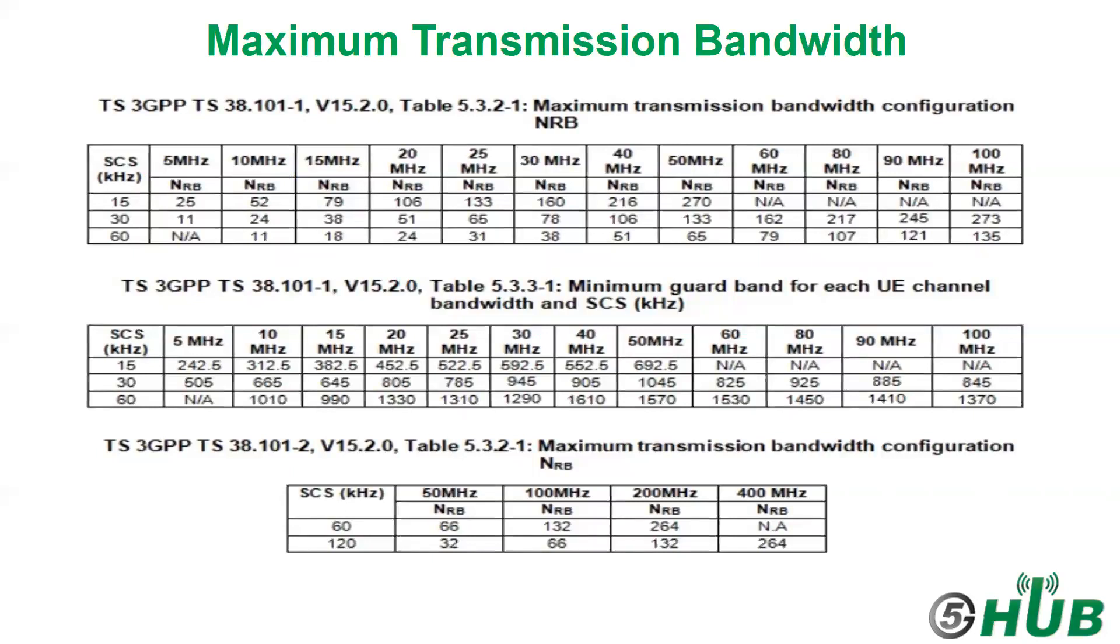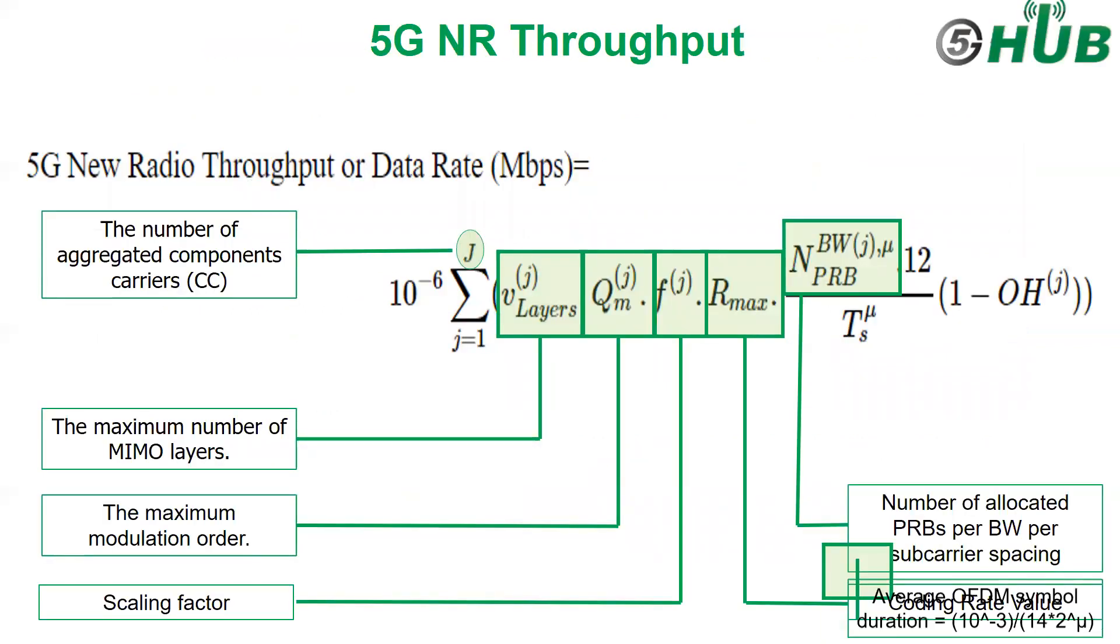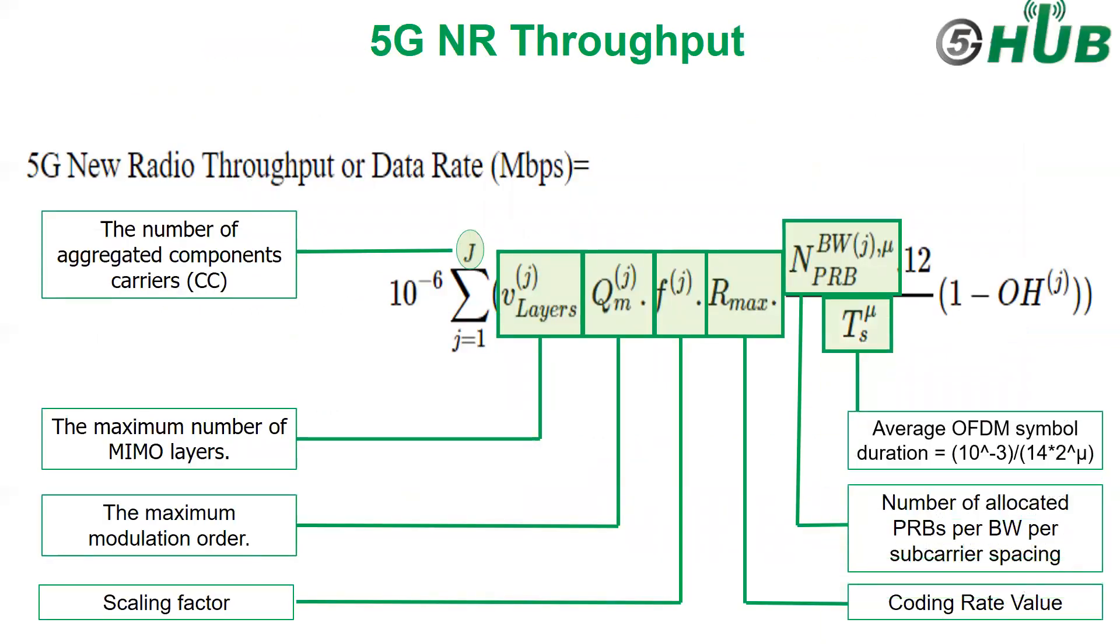The next term is T^μ_s or average OFDMA symbol duration in a subframe for μ value. For normal cyclic prefix, μ will take one of the values 0, 1, 2, 3, 4, or 5. The average OFDMA symbol duration will be calculated as per this equation.